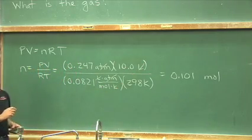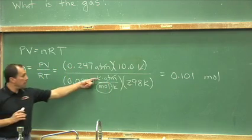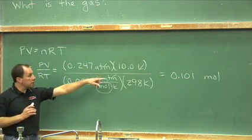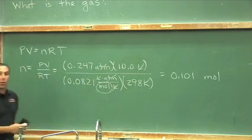Do our moles cancel? No. We only have one occurrence of moles. It's in the denominator of the denominator, so it comes up, and our kelvins cancel. So we are correct in using moles.